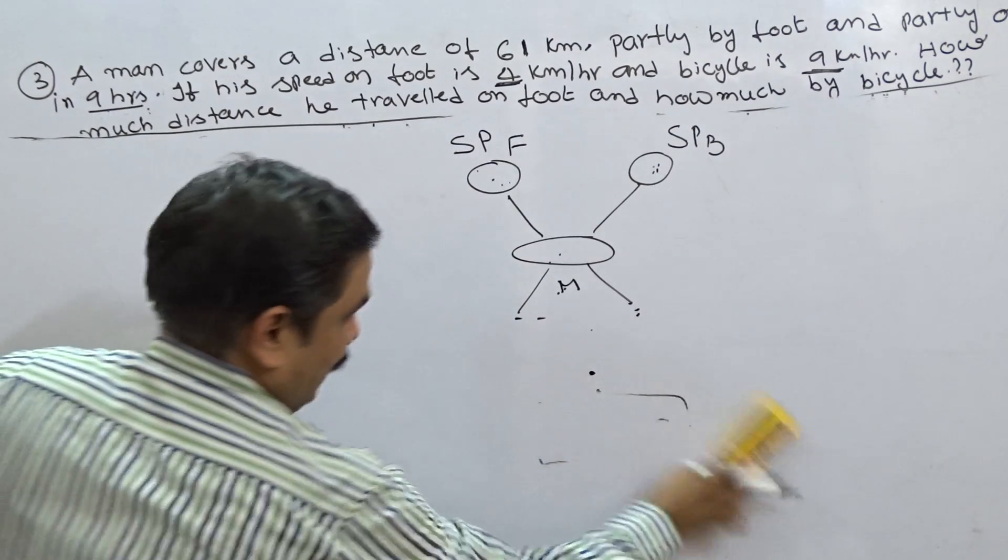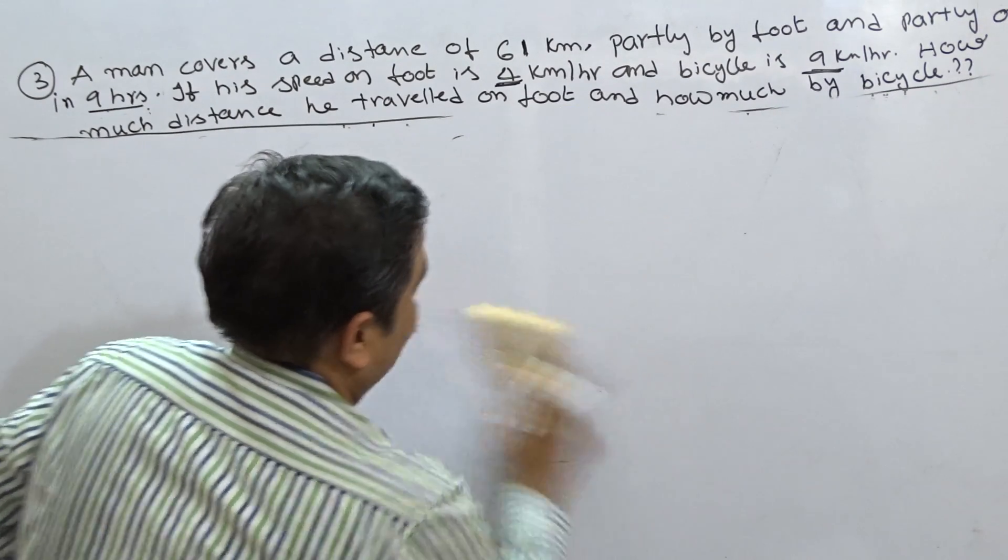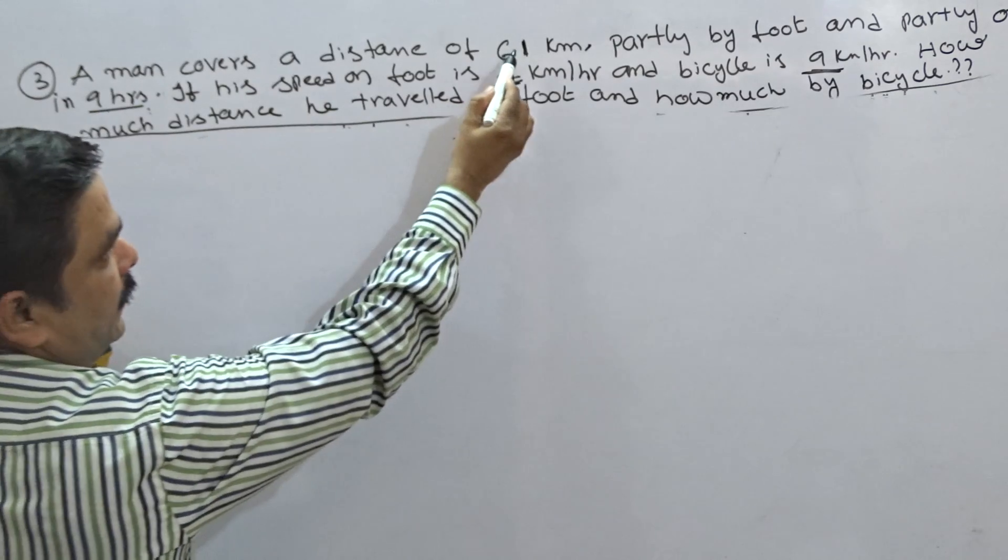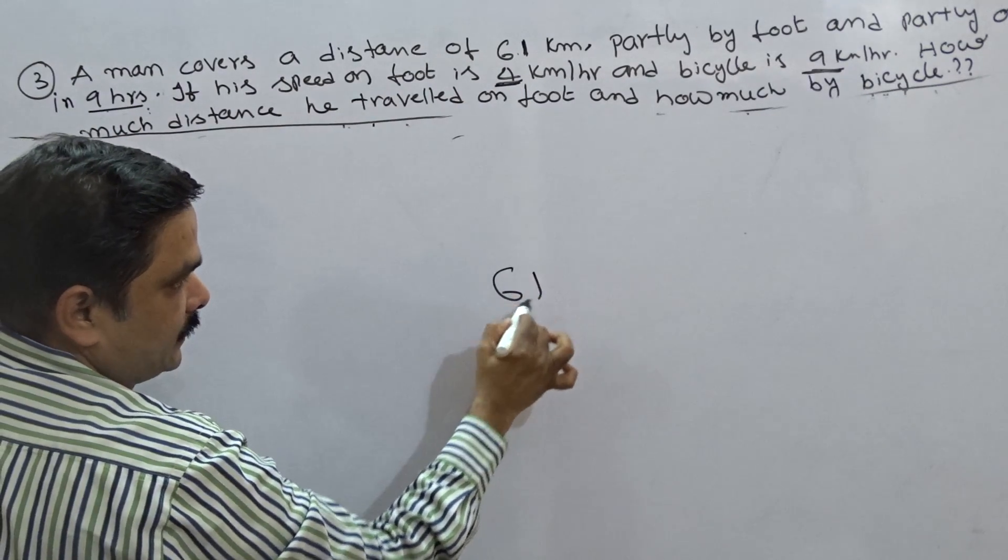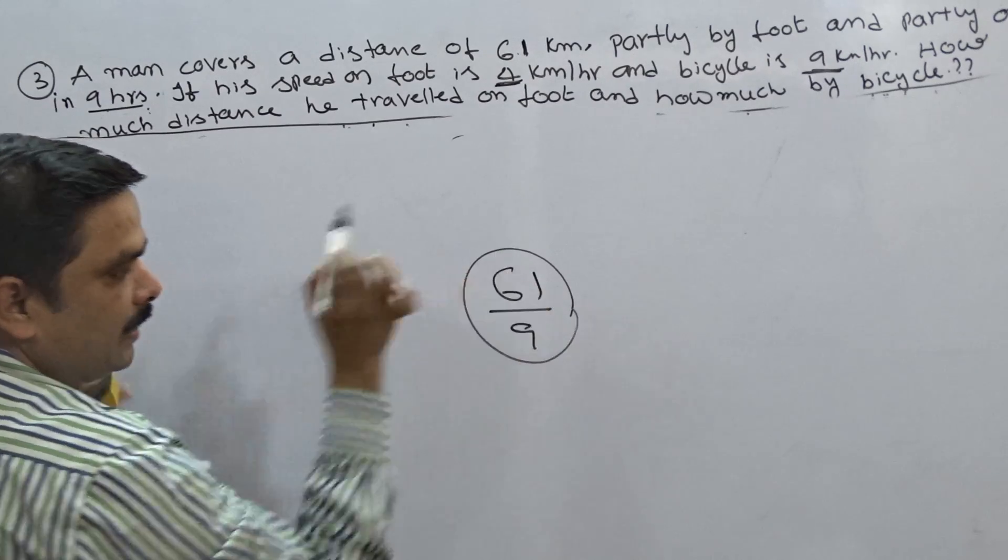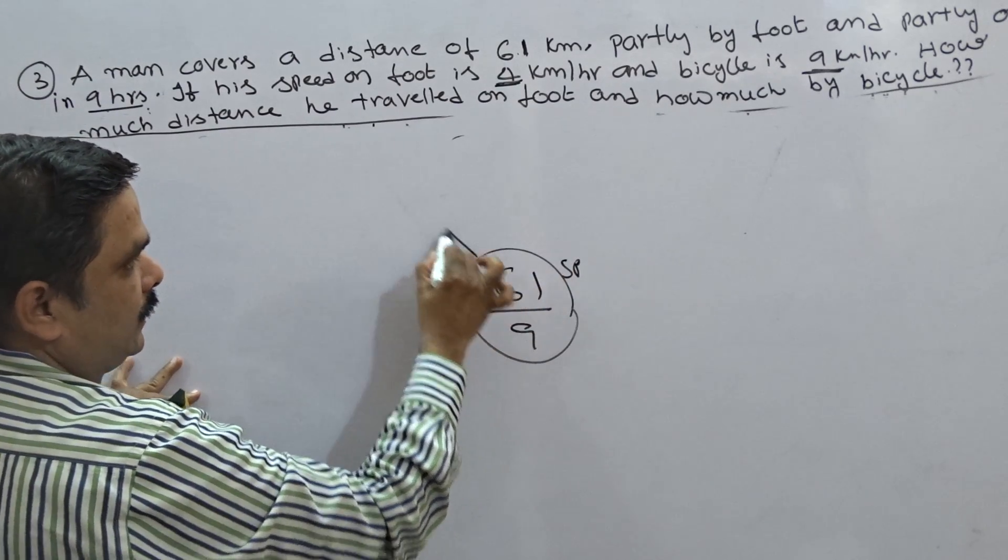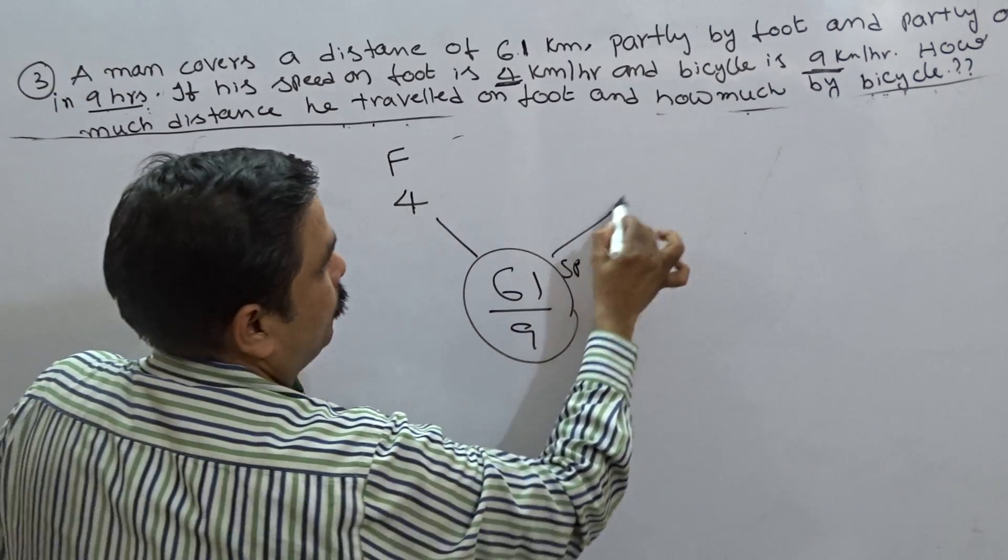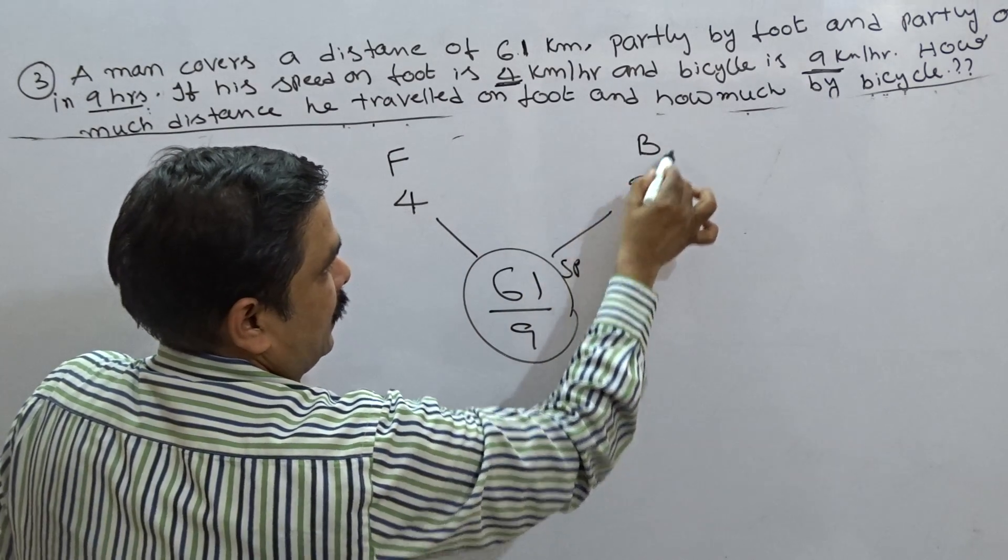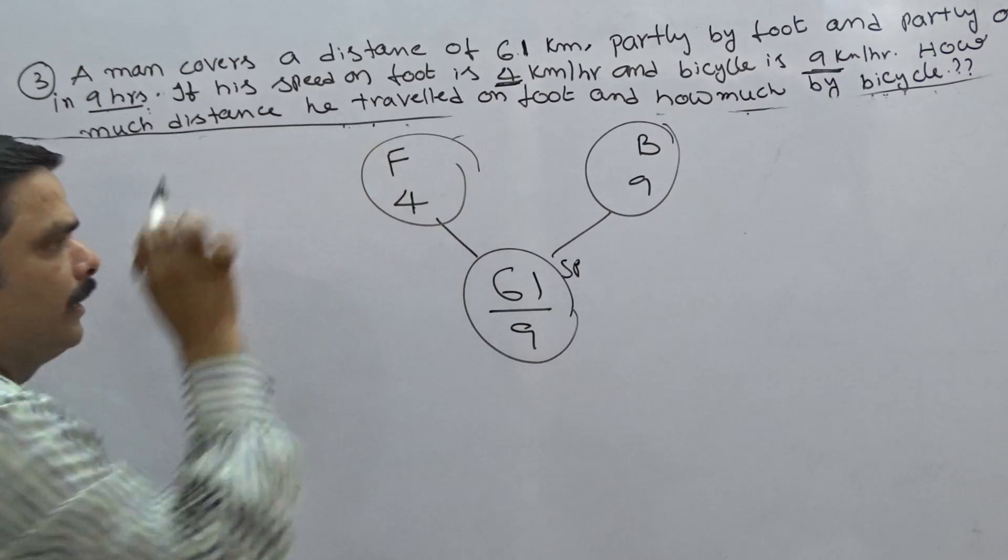How to go for this one? I am making it clear. Now, first, the mean speed is 61 kilometers covered in 9 hours. I am taking this one as 61 by 9. This is mean speed. Next, speed on foot, 4 kilometers per hour. Speed on bicycle, 9 kilometers per hour. Take it in this way.